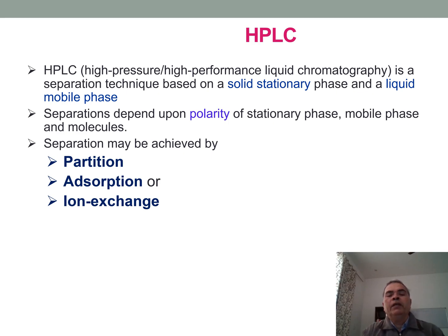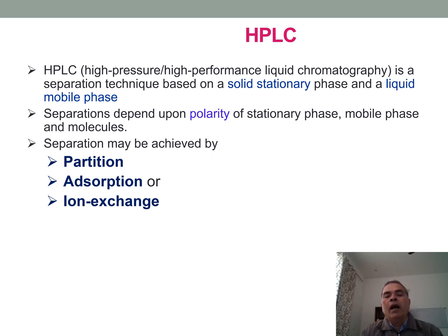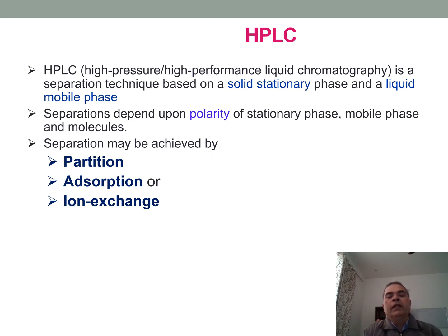HPLC stands for high pressure or high performance liquid chromatography. In HPLC, in a single run, multiple components can be separated and analyzed — that is why it is called high performance liquid chromatography. Since analysis is performed at high pressure, it is also called high pressure liquid chromatography. The stationary phase is solid and the mobile phase is liquid. Separation is achieved by partition mechanism, absorption mechanism, and ion exchange process.